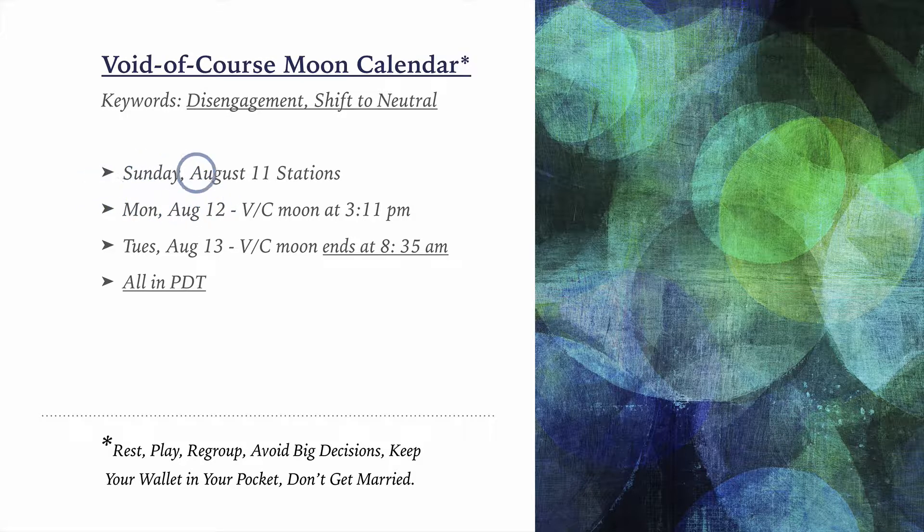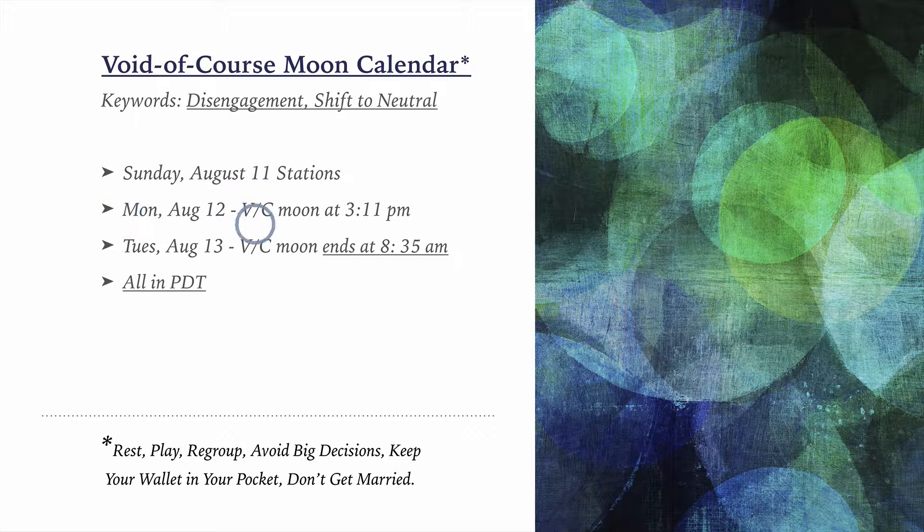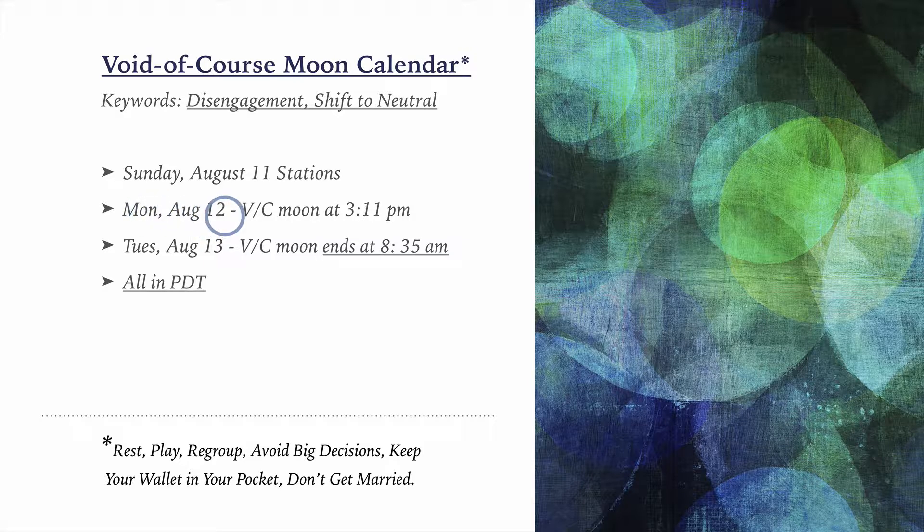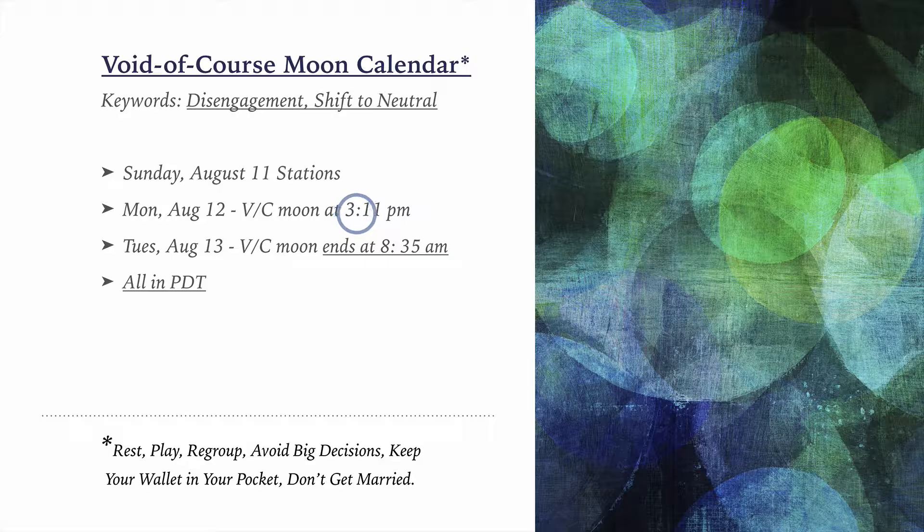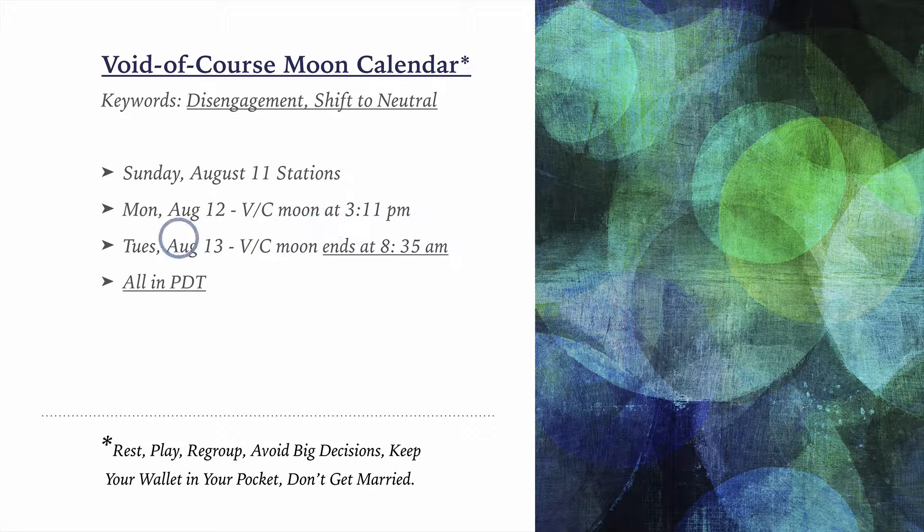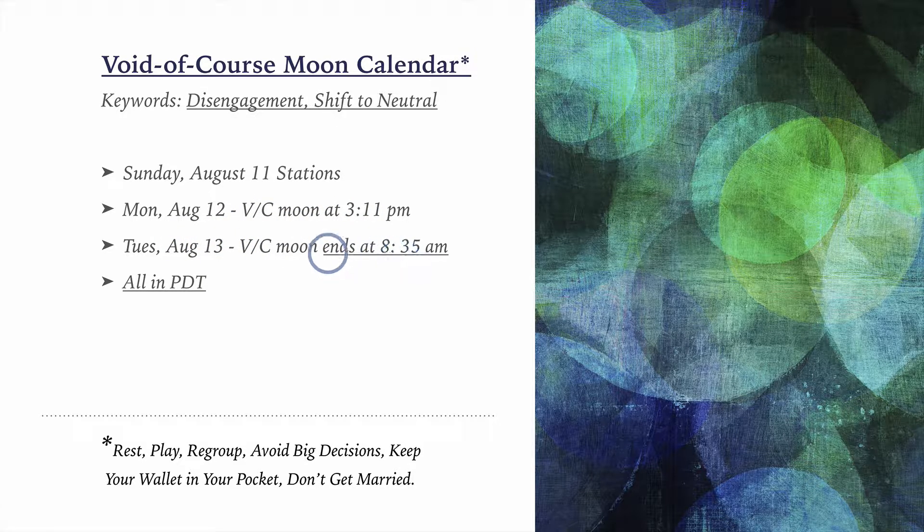So I'm going to get into this first line here in a minute. Let's finish the Void of Course Moon. We do have some kind of shorter term ones this week. Tomorrow, actually today is Sunday, August 11th. And tomorrow on the 12th, we have a Void of Course beginning at 3:11 p.m. Pacific Daylight Time. So adjust if you're on the East Coast, that would be 6:11 p.m. That lasts all the way through until the next morning. And it ends at 8:35 a.m.